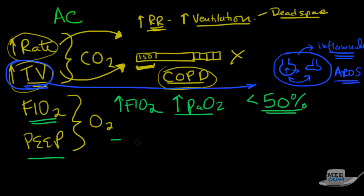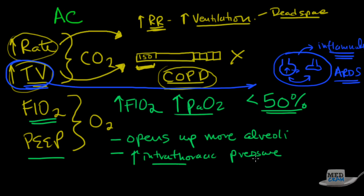Now, the PEEP, remember, is the pressure left in the circuit, in the lungs, in the alveoli at the end of exhalation. The more pressure there is, the more likely those alveoli are going to be open and therefore oxygen exchange is going to go up. So, PEEP opens up more alveoli. But here's the other problem with PEEP. Remember, that if you increase the pressure in the lungs at the end of exhalation, you're also increasing the intrathoracic pressure.